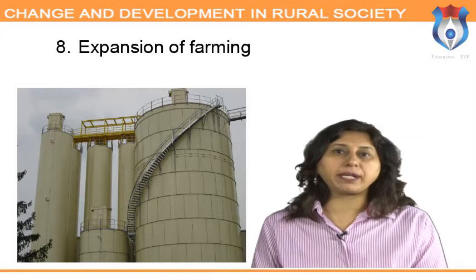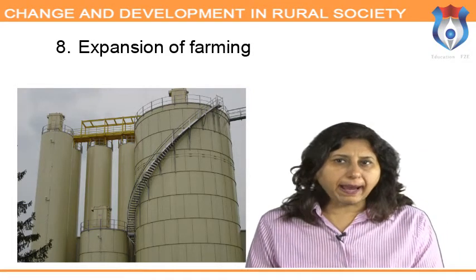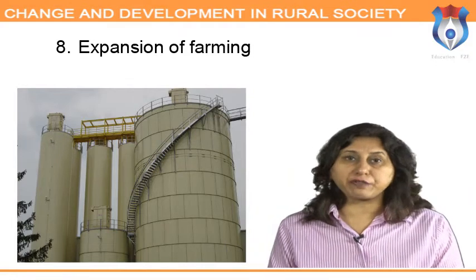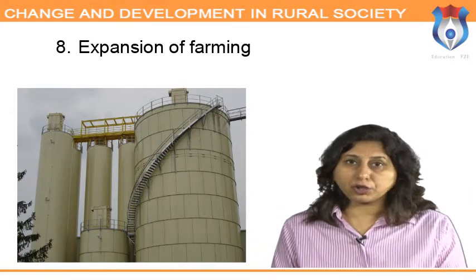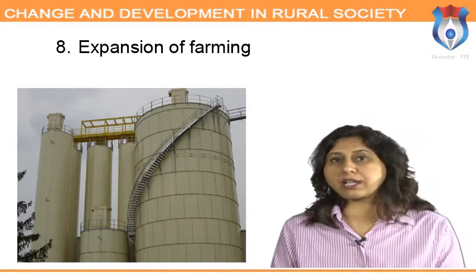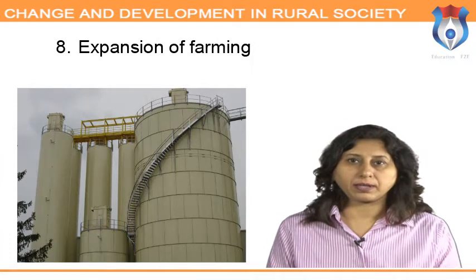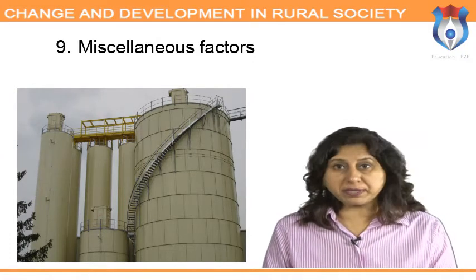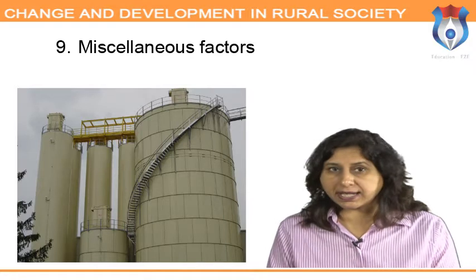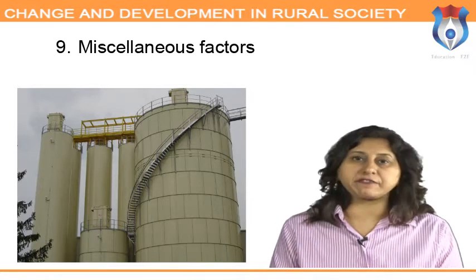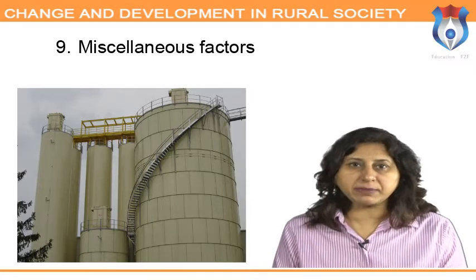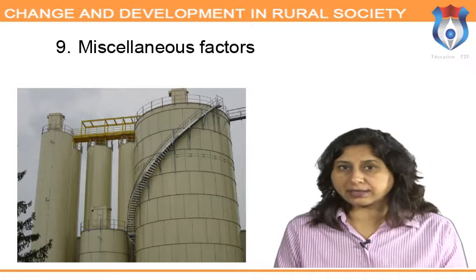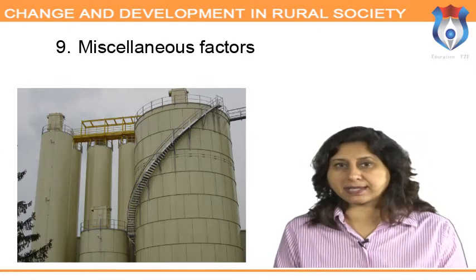Expansion of farming areas: the expansion of area under high-yielding variety of crops contributed to the success of the green revolution. Miscellaneous factors: improvements in storage, food processing, and marketing facilities, as well as government support price policies, also contributed to the green revolution's success.